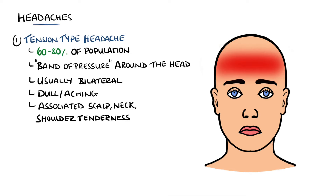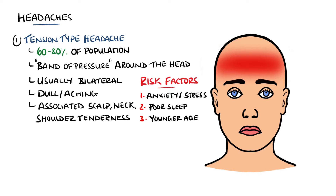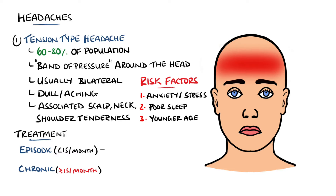Risk factors can include anxiety and stress states, poor sleep, and tension-type headaches are more common in teenagers and young adults. They can also be divided into episodic and chronic headaches, with episodic happening less than 15 times a month, while chronic being 15 or more times a month, which is an important distinction as this may change the treatment.